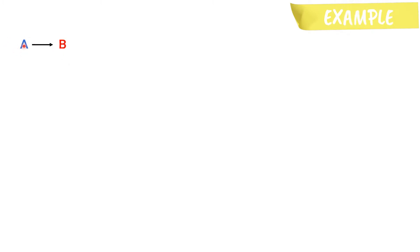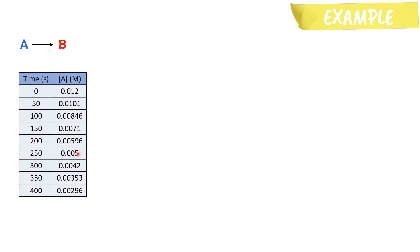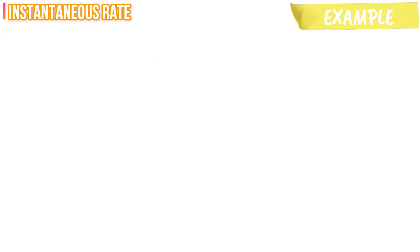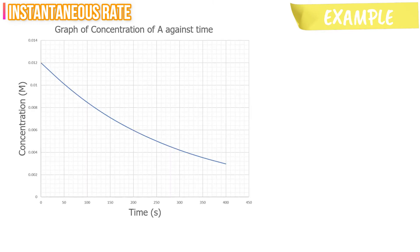Let's have a look at this example. Reactant A reacts to produce B. The following shows the concentration of A recorded as the reaction progresses. We can use this data to plot a graph of concentration of A against time. Now let's calculate the instantaneous rate of reaction. For this example, we are going to calculate the instantaneous rate of reaction at T equals to 150 seconds.